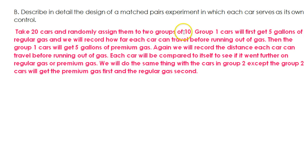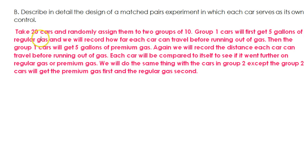So far that's just the ten cars of group one. Then we do the same thing with the cars in group two. The difference is that in the group two cars, we will give them the premium gas first, and then do the regular gas second. That's a key feature of matched pairs — there are always two treatments and each group gets both treatments. But you need two groups because one group does the first treatment then the second, and the other group does it the other way around.